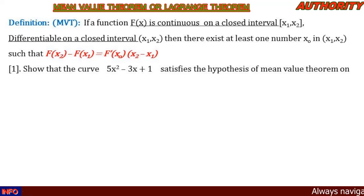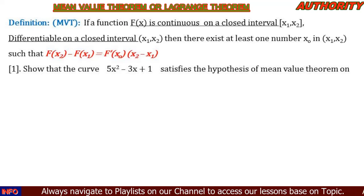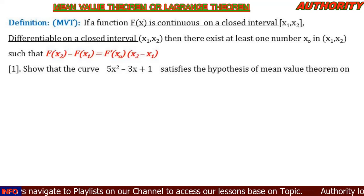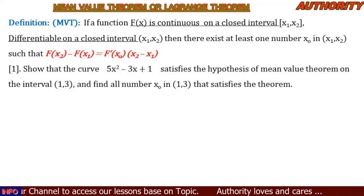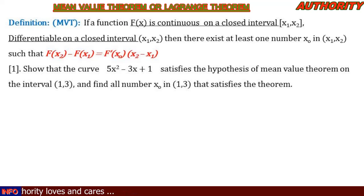Now let's take a look at a question to understand what this theorem is all about. Show that f(x) = 5x² − 3x + 1 satisfies the hypothesis of the Mean Value Theorem on the interval [1, 3], and find all numbers x0 in the interval (1, 3) that satisfy the theorem.